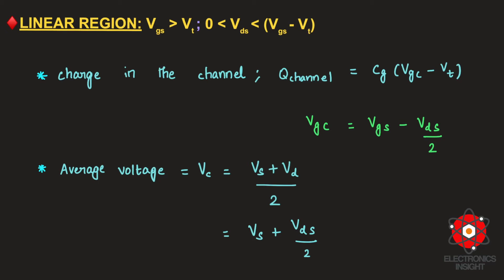We started our discussion for the linear region with the general equation for charge on each plate of a capacitor: Q = CV. Then we wrote the equation for charge in the channel as Q = CG × (VGC − VT), where CG is the capacitance of the gate to the channel, and VGC − VT is the voltage required to attract charge to the channel and invert the p-type substrate to an n-type channel.